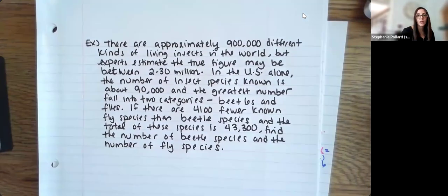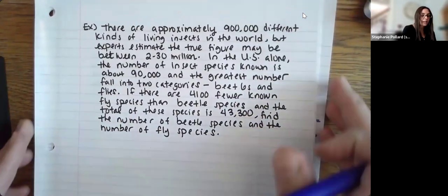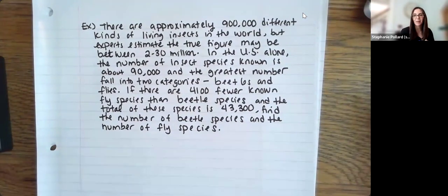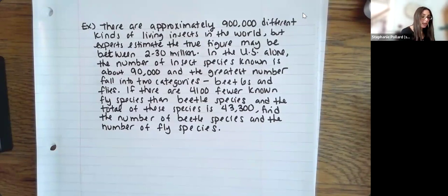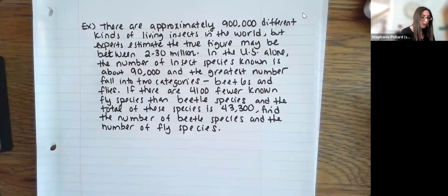Another example — this one is pretty wordy, so if you're writing it down, pause the video here. It says there are approximately 900,000 different kinds of living insects in the world, but experts estimate the true figure may actually be between 2 and 30 million. In the US alone, the number of insect species is about 90,000, and the greatest number fall into two categories: beetles and flies. If there are 4,100 fewer known fly species than beetle species, and the total of these species is 43,300, find the number of beetle species and the number of fly species.